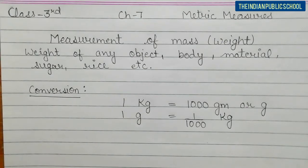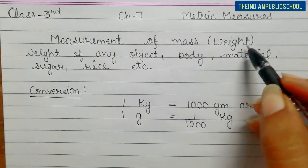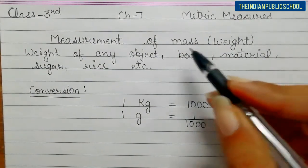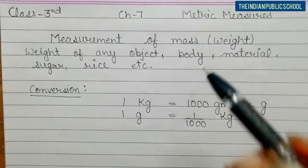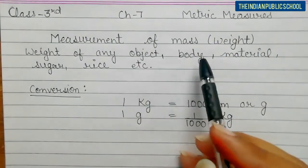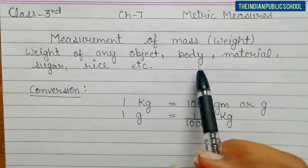Good morning, Class 3. I wish you stay safe and happy at home. Today we will start the next topic of Chapter 7 - Metric Measures. The next topic is measurement of mass. In the previous video we did measurement of length, and today we will do measurement of mass, which we measure for weight. Weight of any object, body, material, sugar, rice - these are examples of what we measure in weight.